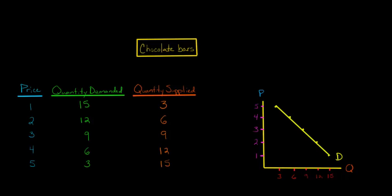Now let's put together our supply curve. So at a price of $1, I'm going to change colors here. At a price of $1, the amount that producers are willing to supply is 3 chocolate bars. At a price of $2, they're willing to supply 6 chocolate bars.